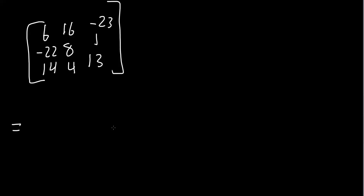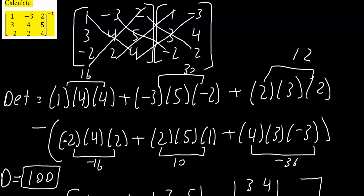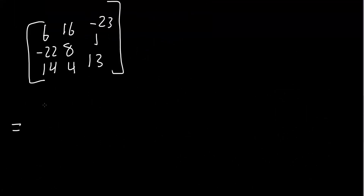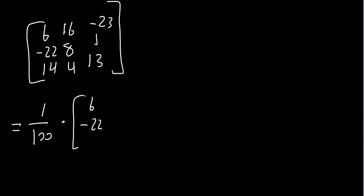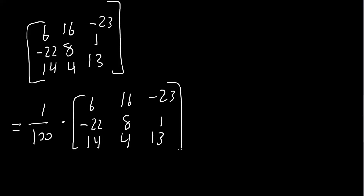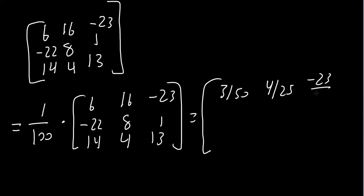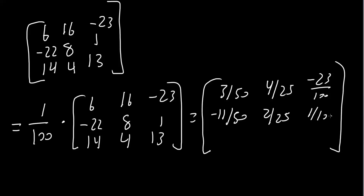Now we take the inverse of the determinant, which we got as 100, so we say 1 over 100, and multiply it by this 3x3 matrix: 6, negative 22, 14, 16, 8, 4, negative 23, 1, and 13. Last step: 6 over 100 = 3 over 50; negative 22 over 100 = negative 11 over 50; 14 over 100 = 7 over 50; 16 over 100 = 4 over 25; 8 over 100 = 2 over 25; 4 over 100 = 1 over 25; negative 23 over 100; 1 over 100; and 13 over 100.